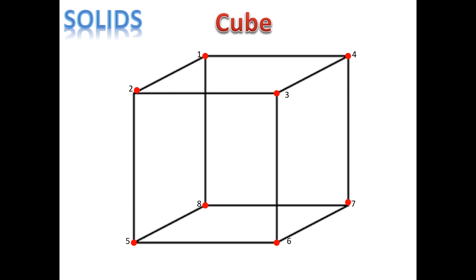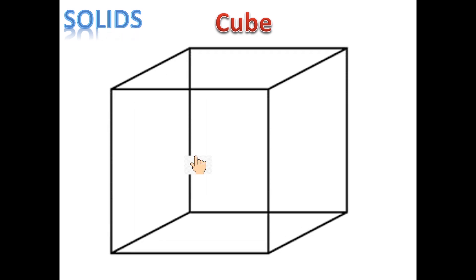There are 8 vertices or corners in a cube. Now let us see how many surfaces a cube has: 1, 2, 3, 4, 5, 6. So there are 6 equal surfaces in a cube.